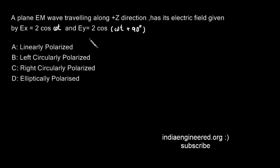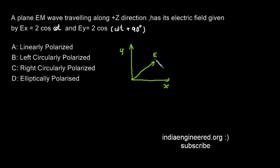We have to look for the locus of the resultant vector. Suppose we have the xy-plane with x here and y here, and the resultant electric field E. To find the kind of polarization, we have to look for what is the locus created by the tip of this electric field vector as time progresses at some point in space — that locus is in the xy-plane.